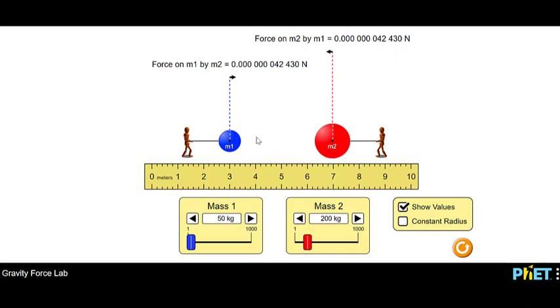So the force that they are being attracted to each other is the same. And now you can see how this force changes. Or if those numbers are hard for you to make sense of, we can unclick the show values button. I mean, just pay attention to these arrows, still representative of the size of the force. So let's see, what do you think will happen if I increase the blue ball's mass?